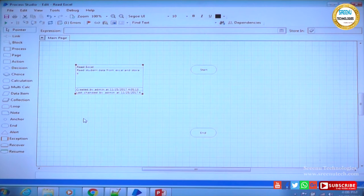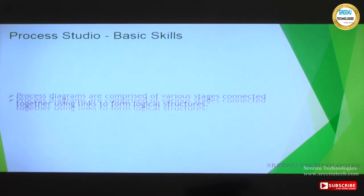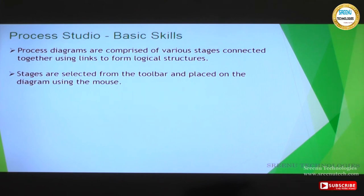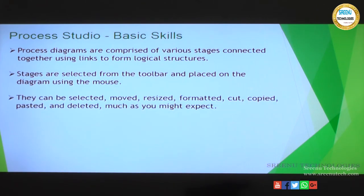So we have seen the objective and how to create a new process and the various stages available. Next, some basic skills are required. Process diagrams are comprised of various stages connected together using links to form a logical structure. Stages are selected from the toolbar and placed onto the diagram using the mouse. Based on our need, we pull the particular stage onto the grid and connect using links.